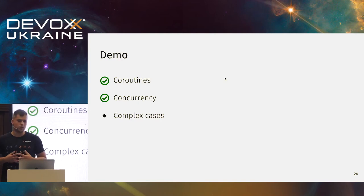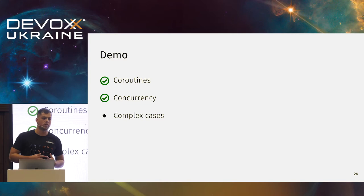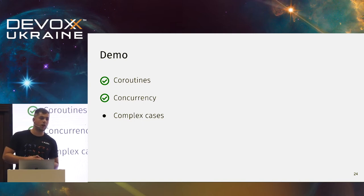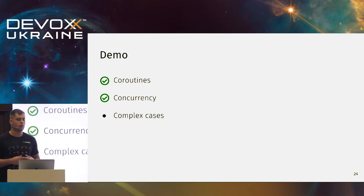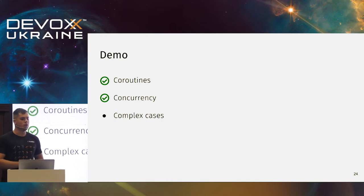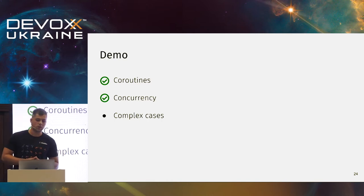As you can see, it's easy to introduce concurrency and it's explicit — if you want to run something concurrently, you see it in the code. In real applications you may need more complex cases like cancellations, timeouts, deadlines, limiting concurrency, and retries.